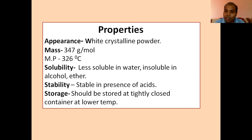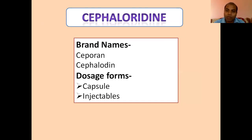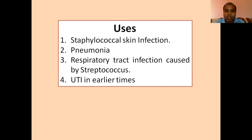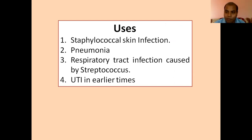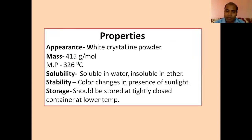The next compound under this class is cephaloridine. It is available under the brand name Separin/Cephaloridine, and the dosage forms are capsules and injectables. It is also useful against staphylococcus skin infections, pneumonia, and respiratory tract infections. It was used for UTI in the 1960s and 70s, but after that it was withdrawn from the market for UTI indication. It can now be used for staphylococcal infections only.